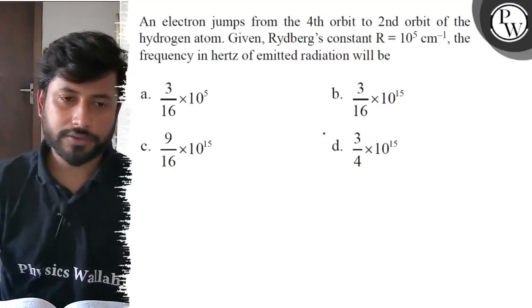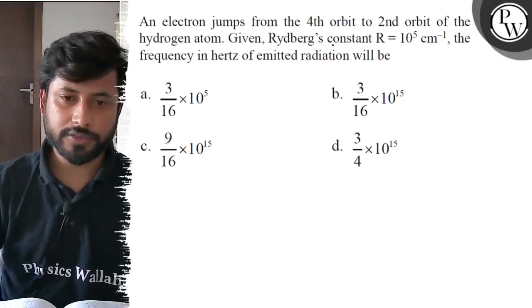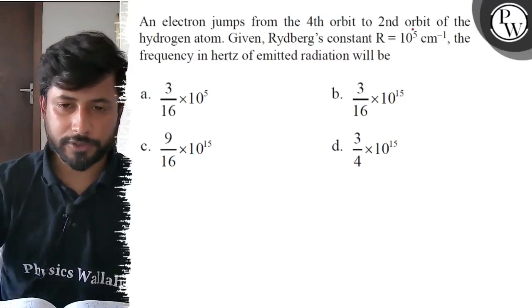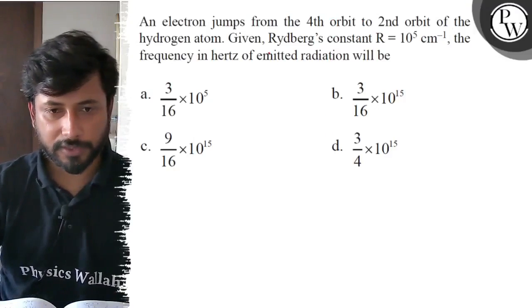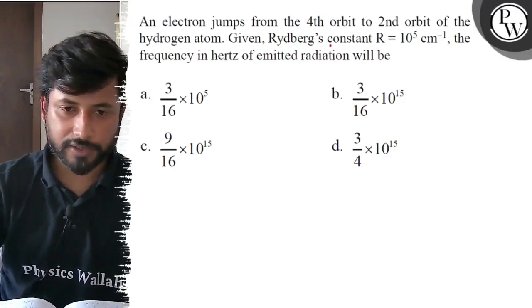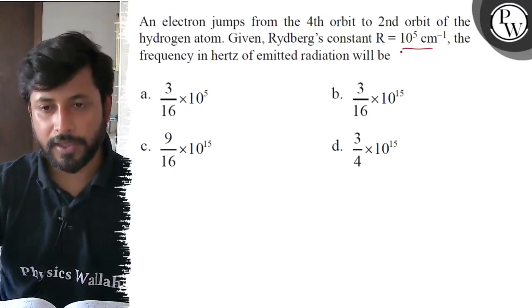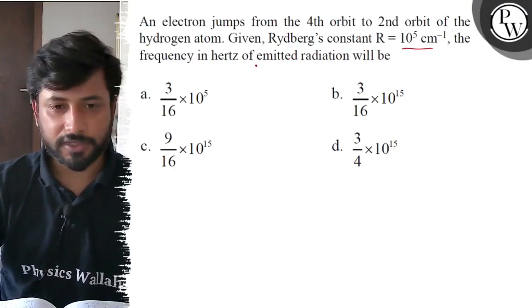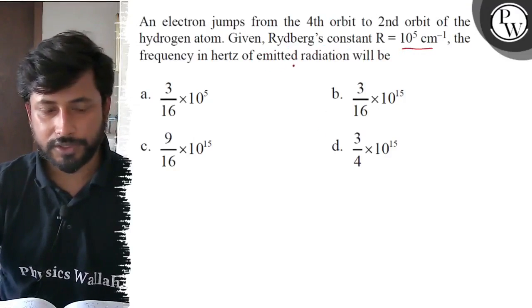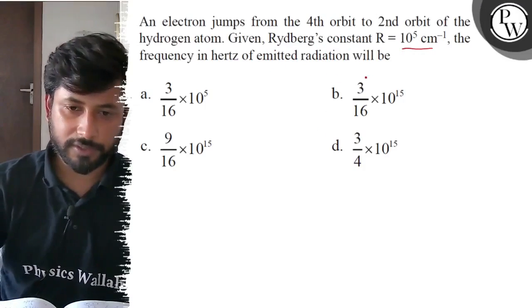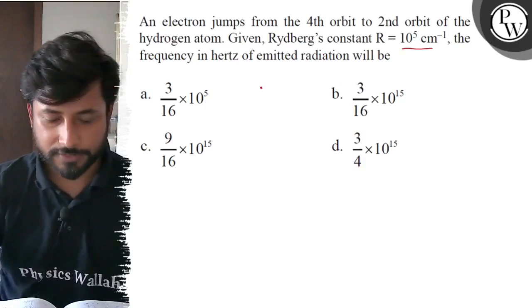Hello everyone, let us see this question. An electron jumps from the 4th orbit to the 2nd orbit of the hydrogen atom. Given the Rydberg constant 10 to the power 5 per centimeter, find the frequency in hertz of the emitted radiation.